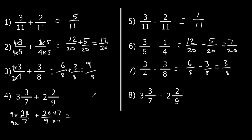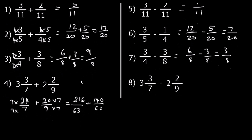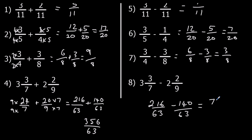9 times 24: well, 10 times 24 is 240, take off 24, that's 216. And we could have used a calculator for that one. 7 times 20 is 140 over 63. Then we're going to add them up: 216 over 63 plus 140 over 63 is 356 over 63 — it doesn't simplify. Same example for subtraction: 216 over 63 minus 140 over 63, which is 76 over 63. That doesn't simplify either.